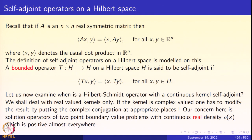Let us recall self-adjoint operators on a Hilbert space and prove the spectral theorem for compact self-adjoint operators. Recall that if A is an n×n real symmetric matrix, the inner product ⟨Ax, y⟩ equals ⟨x, Ay⟩ for x, y in ℝⁿ, where the angle brackets denote the usual dot product in ℝⁿ. The definition of self-adjoint operators on a Hilbert space is modeled along this.